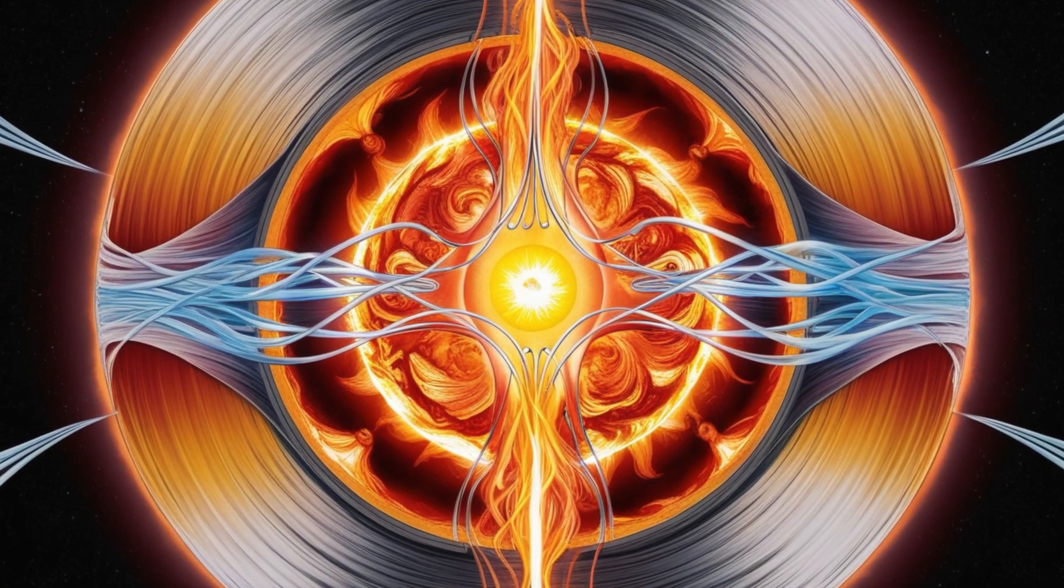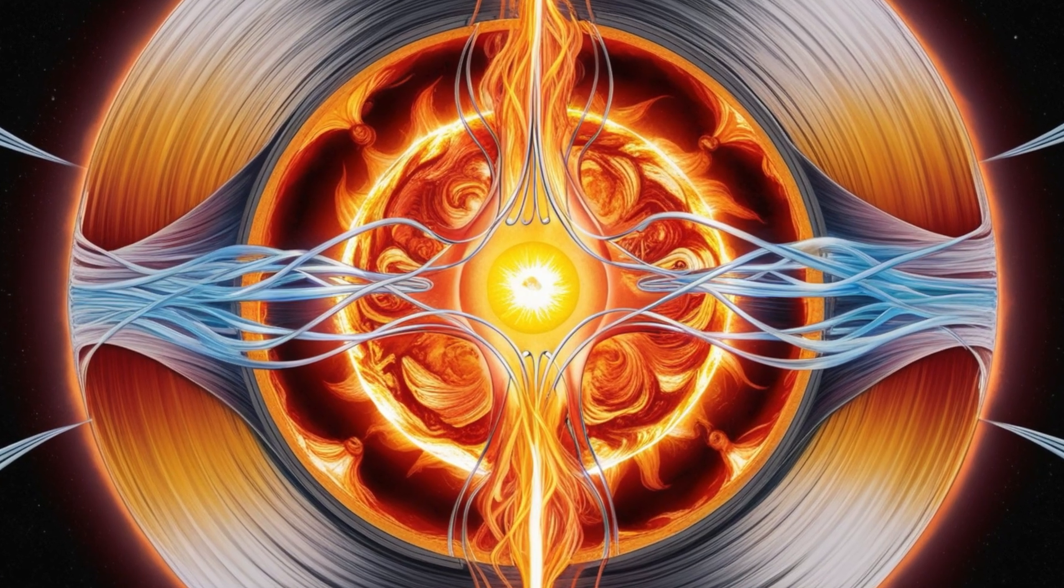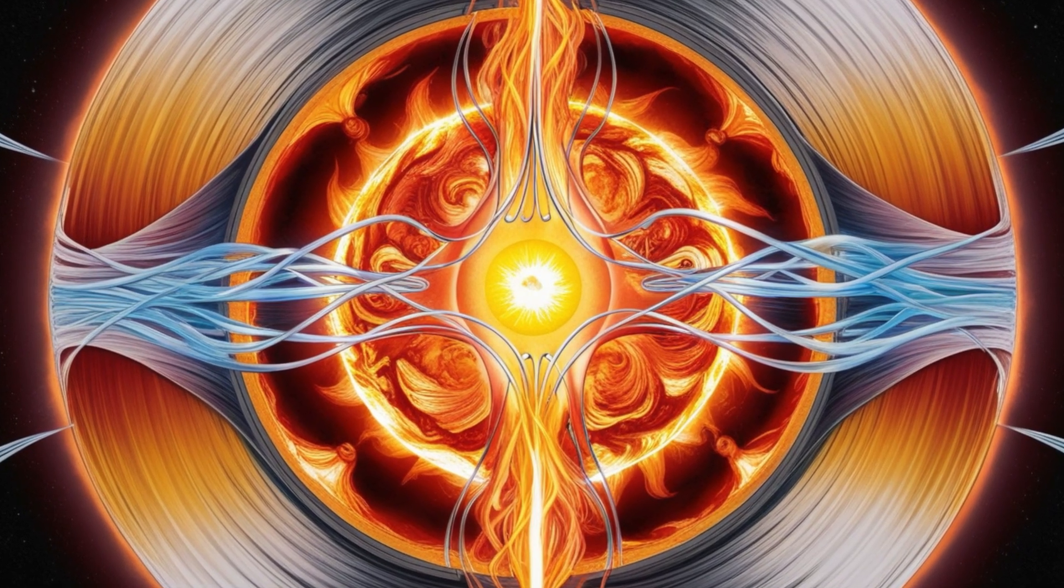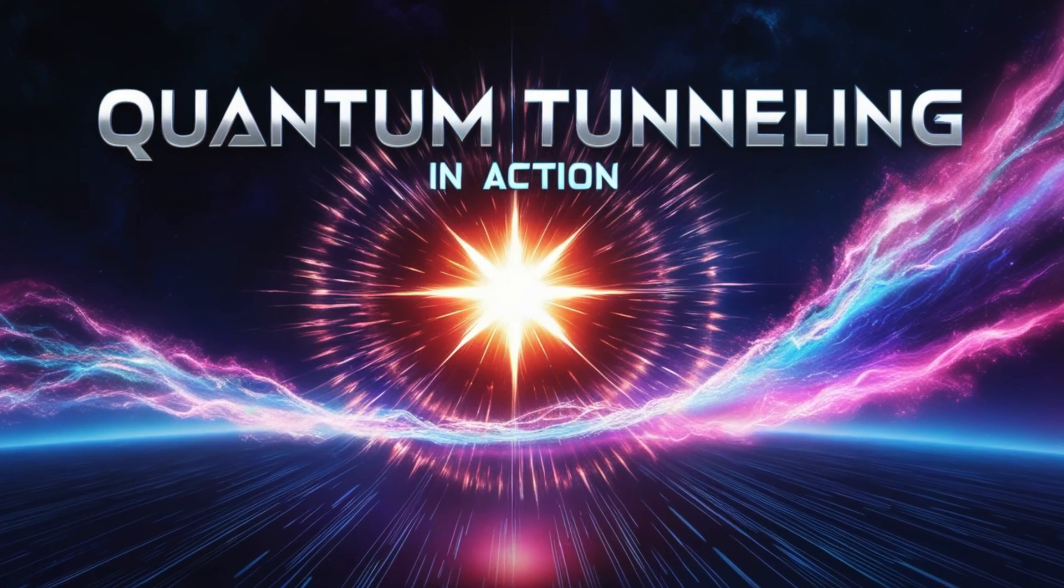At the temperatures inside the sun, the protons simply don't have enough classical energy to overcome this barrier. By classical physics, the sun shouldn't be shining.